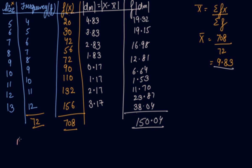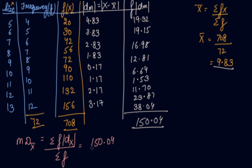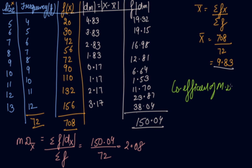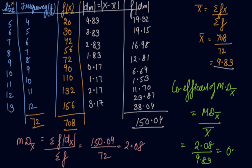For mean deviation using mean, the formula is: summation of F×|D| divided by summation of F. The summation of F×|D| is 150.04, divided by 72, which gives 2.08. The coefficient of mean deviation using mean is mean deviation divided by the mean: 2.08 divided by 9.83, giving an answer of 0.21.